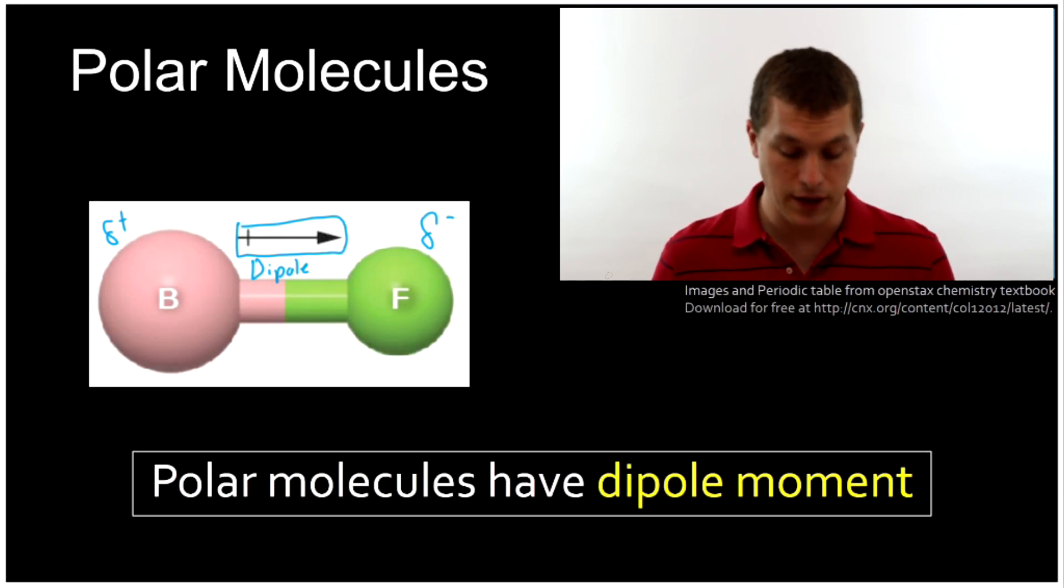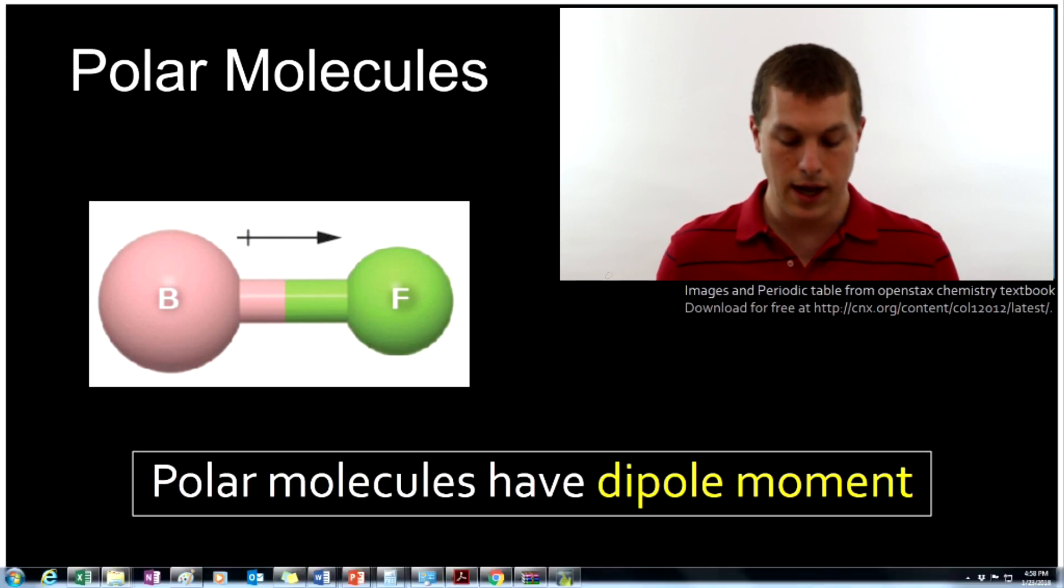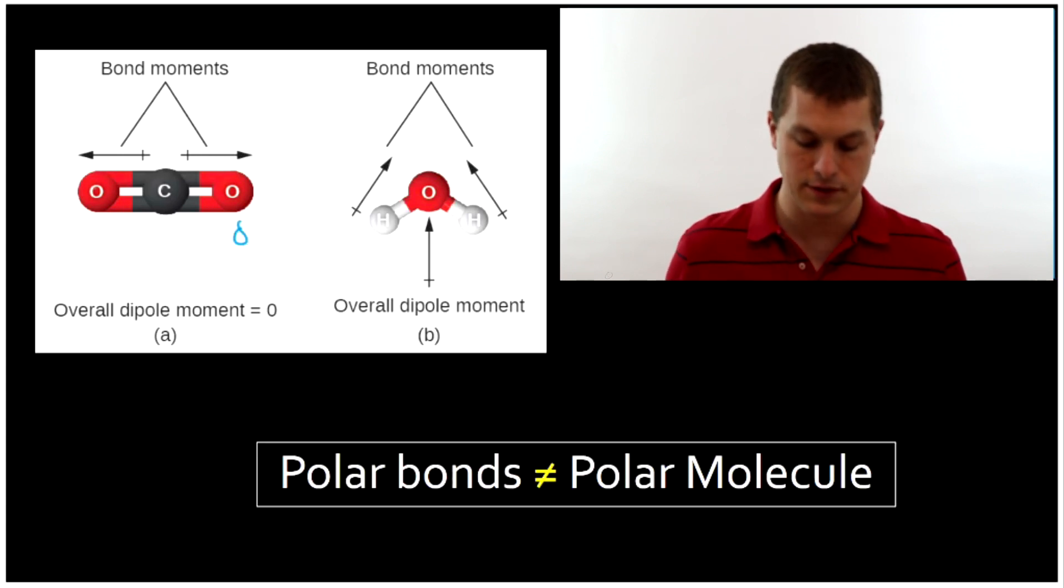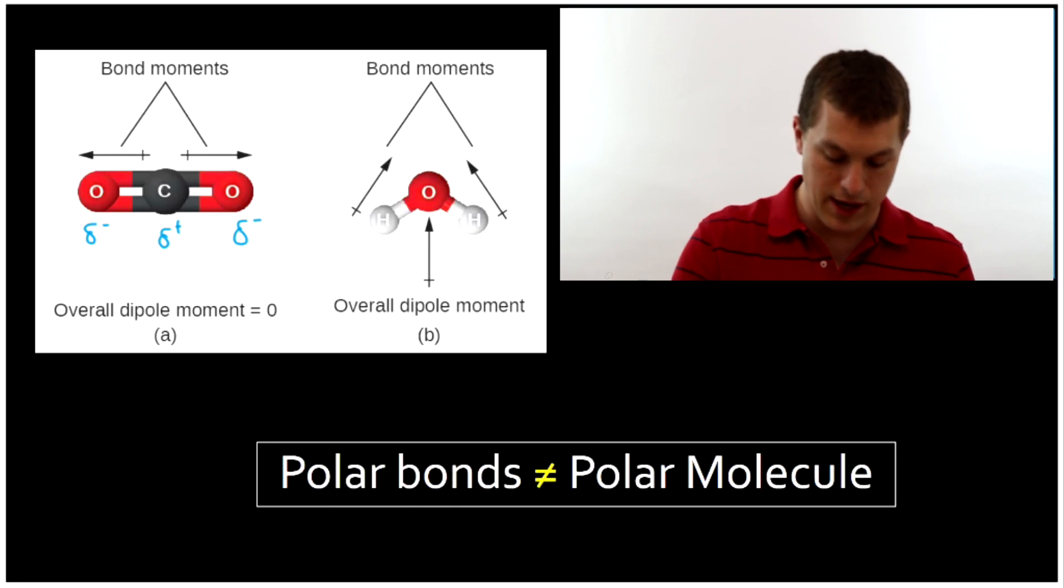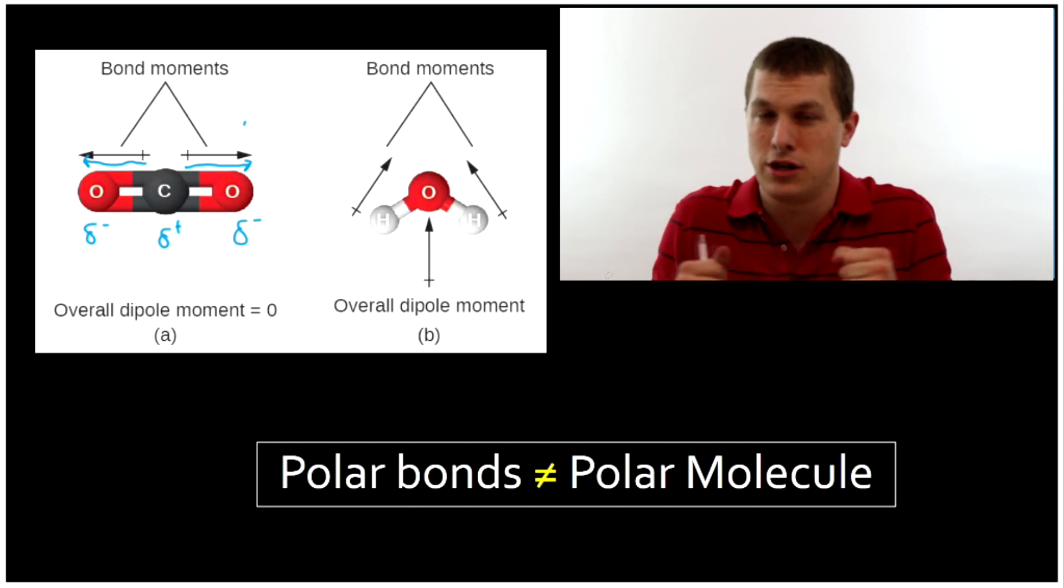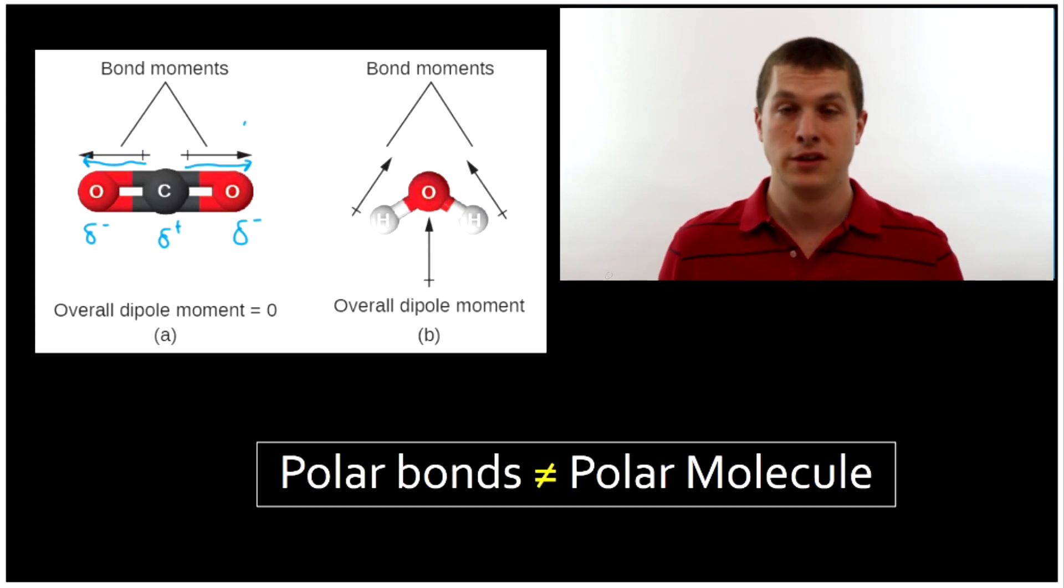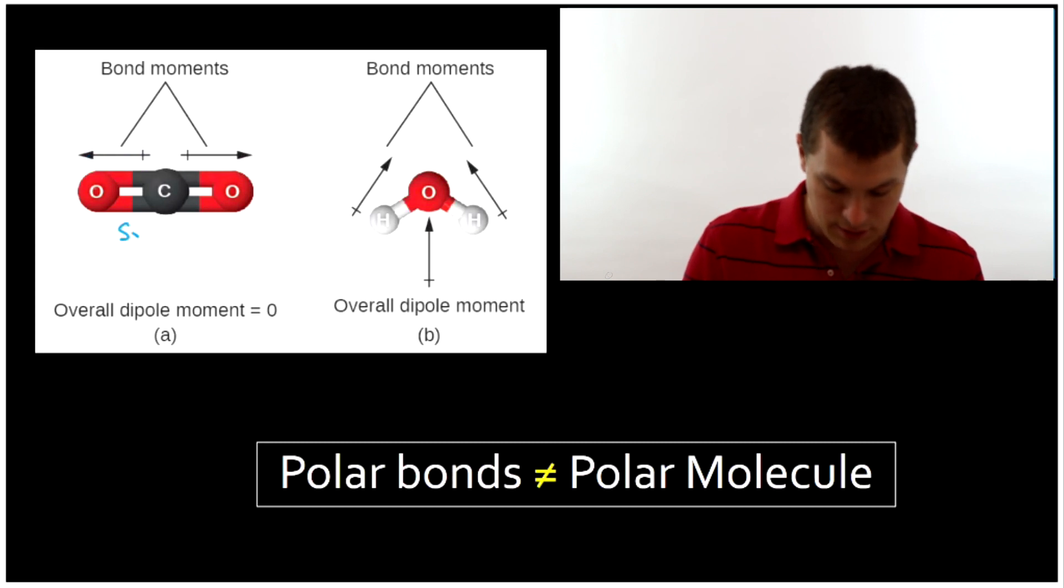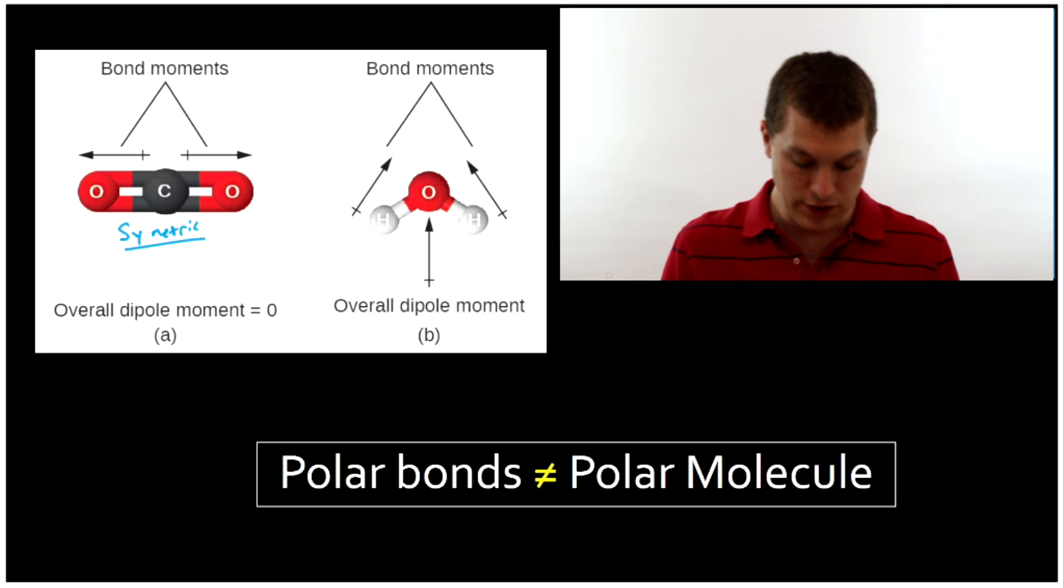In the case of diatomic molecules like BF here, you are always going to have a polar molecule if you have a polar bond. Things get a little more complicated, though, if we get to molecules with multiple atoms. So for example, let's look at CO2. Oxygen is more electronegative, so we have two dipole moments, one going to the right and one going to the left. They're exactly the same length and pulling with exactly the same force, so those dipole moments cancel out. And on the whole, CO2 does not have a dipole moment. So even though those are polar bonds, they cancel out because the molecule is symmetric.